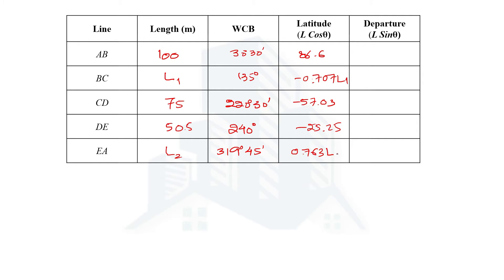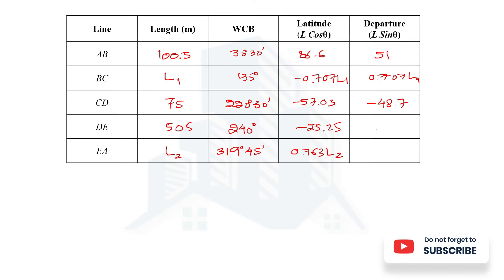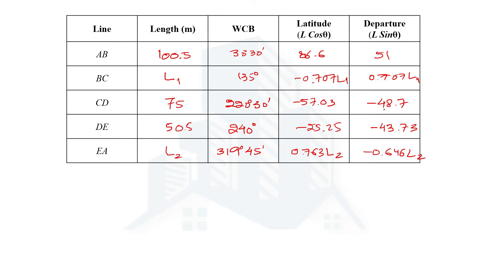For departures, using the formula L·sin θ: the departure of AB is 51 — actually, with the corrected length of 100.5 m, the departure calculation gives approximately 51. The departure of BC is +0.707·L1. The departure of CD is −48.7. The departure of DE is −43.73. The departure of EA, whose length is required, is expressed in terms of variable L2.